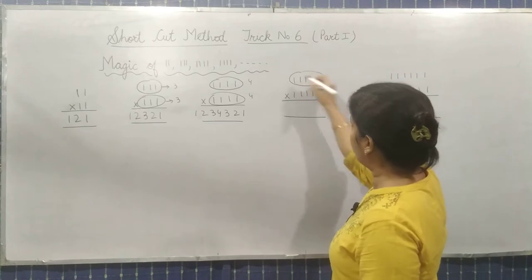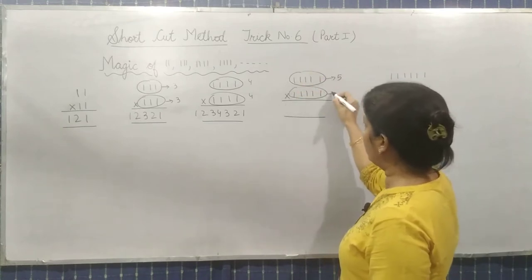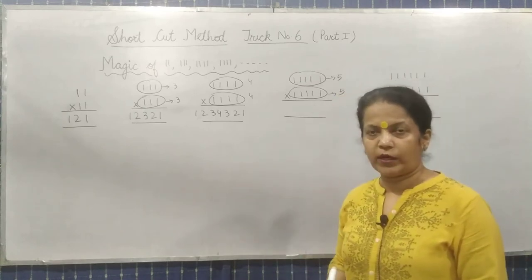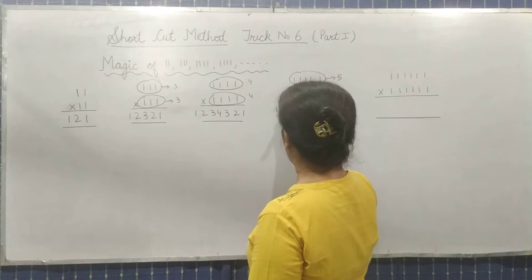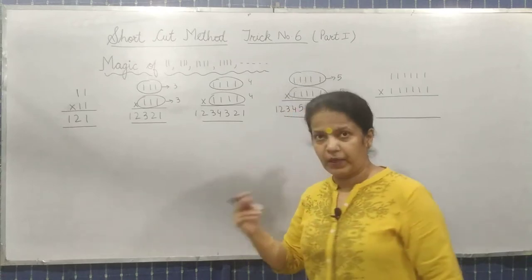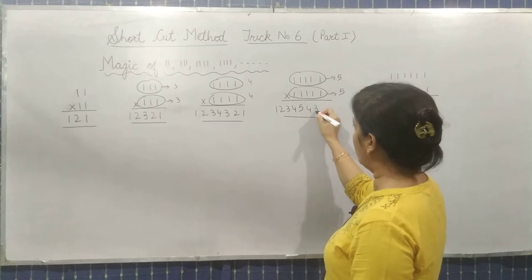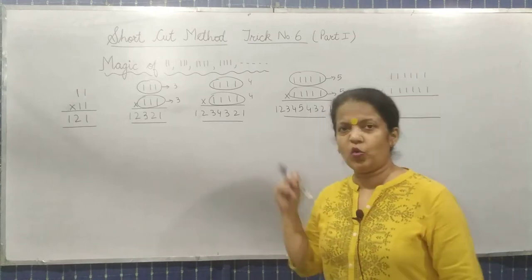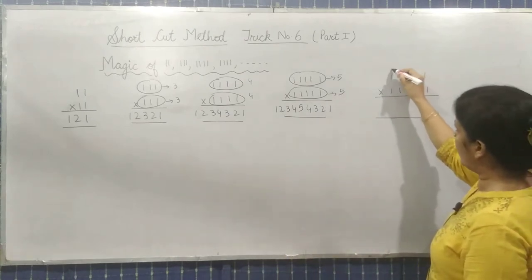5 ones. And here also it's 5 ones. So what should be the answer? 1, 2, 3, 4, 5. Now what will you do? Decreasing order: 4, 3, 2, 1. You can check the answer with the calculator also. Come to this one.